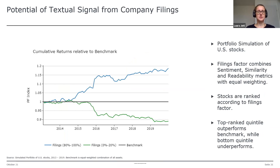We then evaluated the potential of the textual signal in a portfolio context. We ran a portfolio simulation of US stocks and constructed a filings factor combining sentiment, similarity, and readability metrics with equal weighting. Stocks are ranked according to the filings factor. The top quintile — the top 20%, shown as the blue line — significantly outperforms the benchmark, while the bottom quintile, the bottom-ranked 20%, falls below the benchmark. This looks like a promising signal to us.